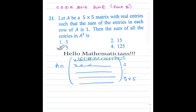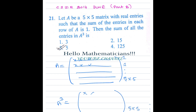Now A is a 5 by 5 matrix, therefore A cubed is also a 5 by 5 matrix, and we want to find the sum of all the entries of A cubed. That is the question.